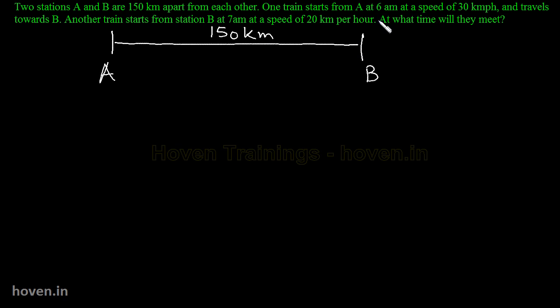One train starts from A at a speed of 30 and travels towards B. Yahaan se ek train chalti hai. Woh chal rahi hai 30 km per hour peh. Another train starts from station B at 7 am at a speed of 20. Yeh ek train idhar se chal rahi hai. Woh bhi chal rahi hai 20 km per hour peh.